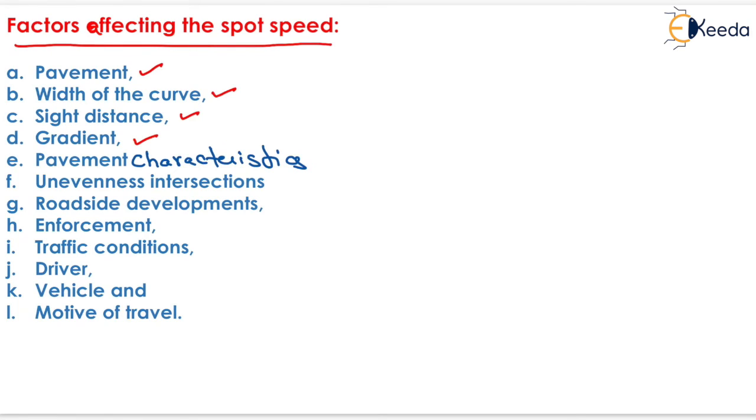The next factor is the pavement characteristic. Another one is unevenness, intersections, roadside developments, enforcement, traffic conditions, driver, vehicle, and the last one is motive of travel. They all affect the spot speed of the vehicle.